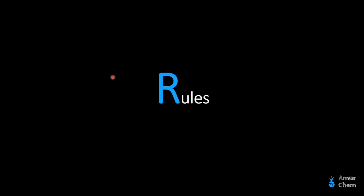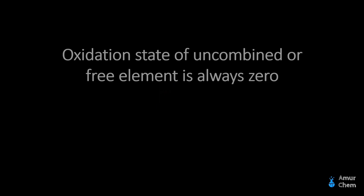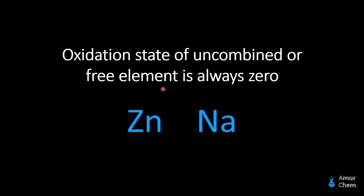Now we will go through some rules for calculating the oxidation state or oxidation number. Rule 1: the oxidation state of an uncombined or free element is always zero. For example, sodium and zinc — if both these elements exist as free elements, meaning they are not attached to any other atom, then their oxidation state is zero.